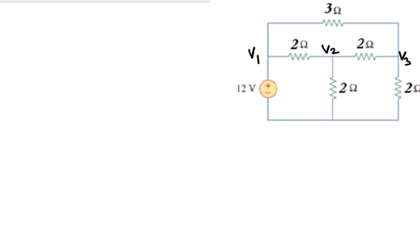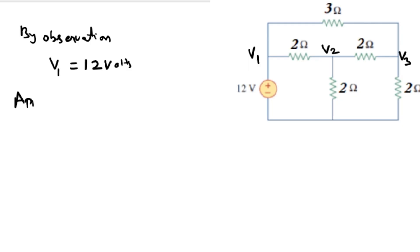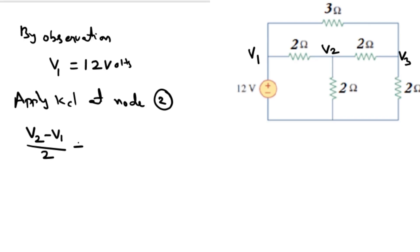Now by observation itself, V1 is equal to 12 volts. Now at node 2, we will apply KCL. Applying KCL at node 2, we write down the equation: V2 minus V1 by 2, plus V2 minus V3 by 2, plus V2 minus 0 by 2, equals to 0.